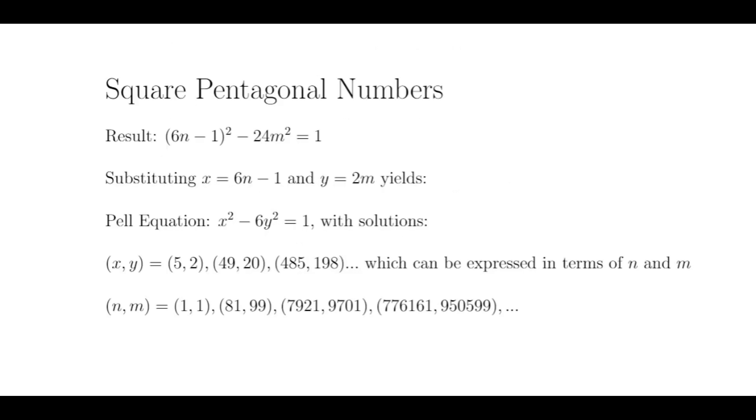To make things a little easier, I'm going to substitute 6n minus 1 for x and 2m for y. This gives us a form of a famous Diophantine equation called the Pell equation. So we have x squared minus 6y squared equals 1, which we can solve for x and y, and then convert them in terms of n and m.